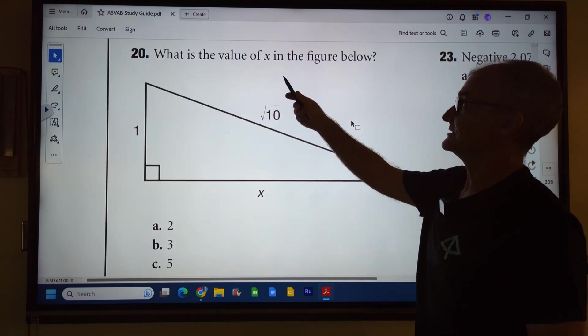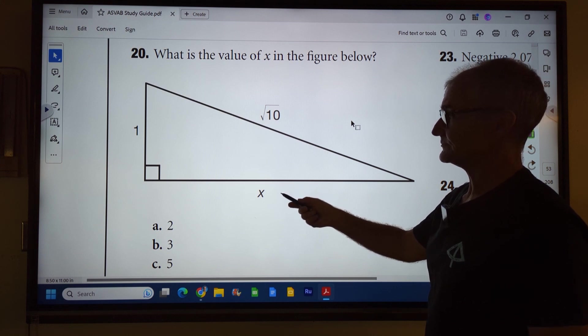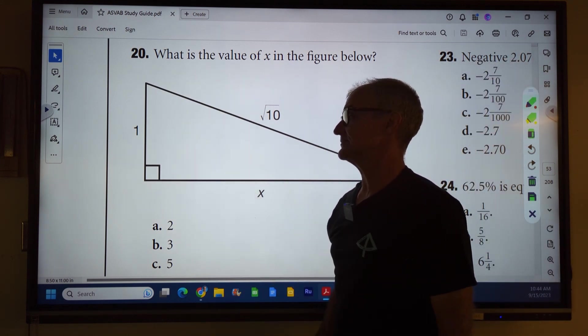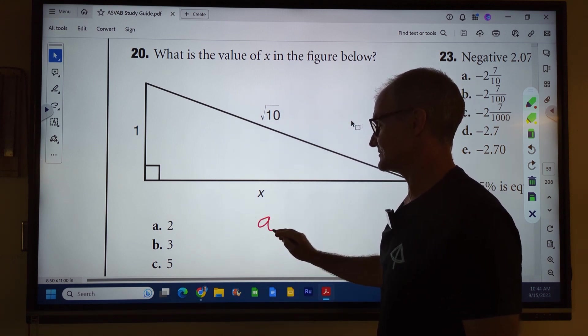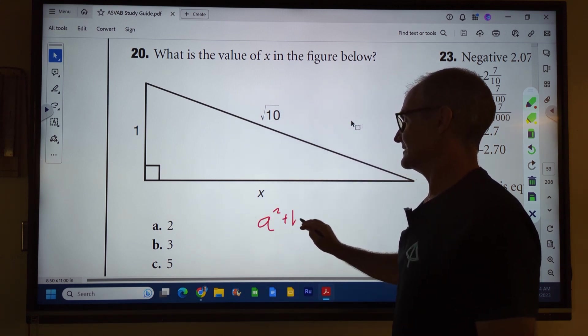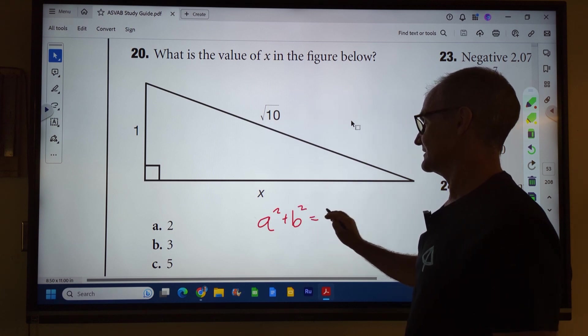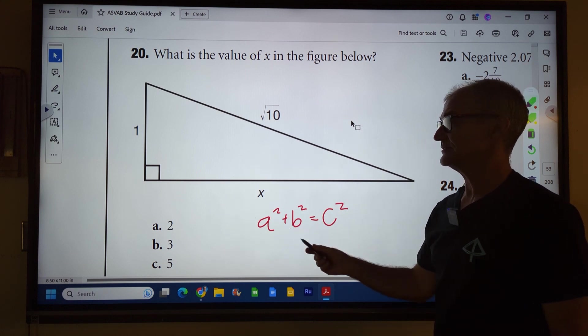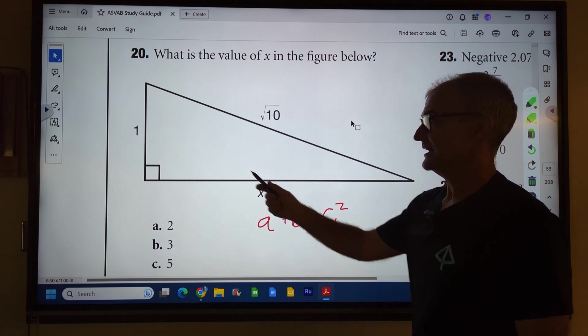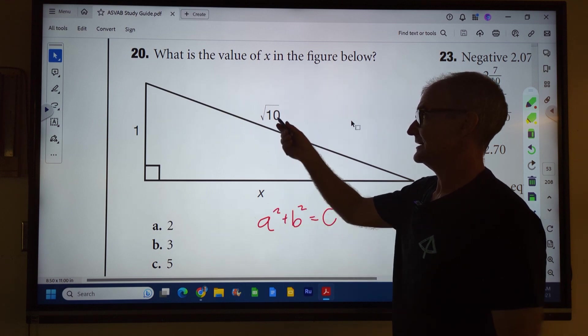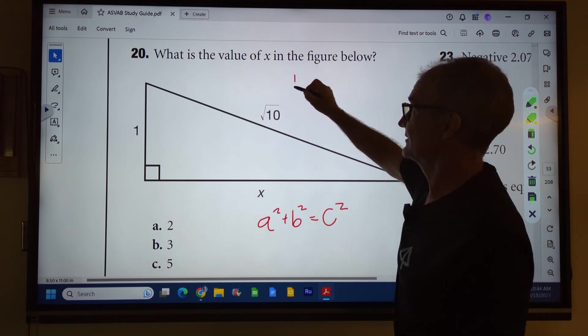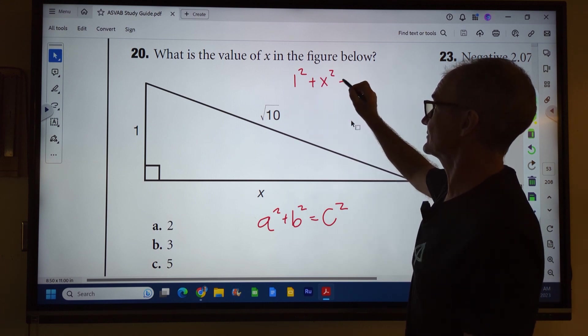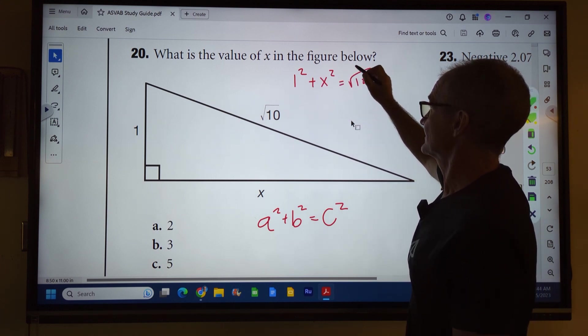Number 20: What is the value of x in the figure below? This thing, this little box here is telling us 90 degrees. So it's a right triangle. In a right triangle, I know that one leg squared plus the other leg squared is equal to the hypotenuse squared. It's called the Pythagorean theorem. I need to have two of these three variables and I do. I have the one, I don't have this side, and I have the hypotenuse. So I have one squared plus the other leg squared equals hypotenuse squared.